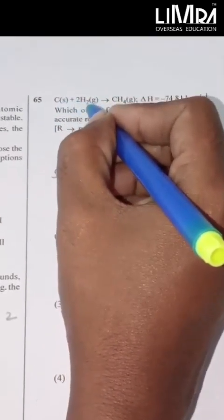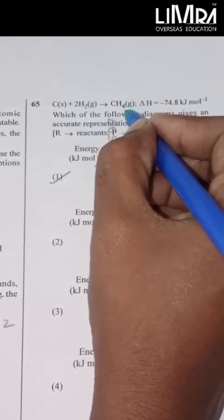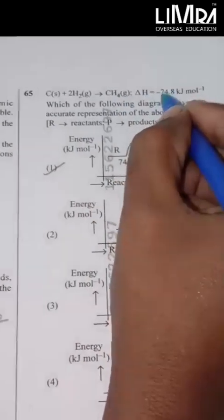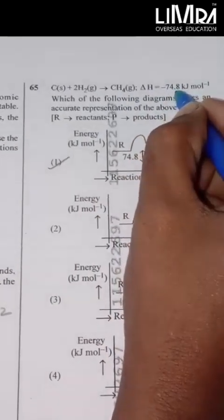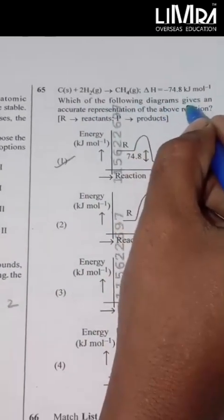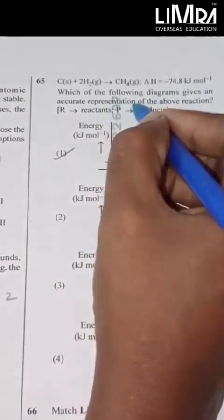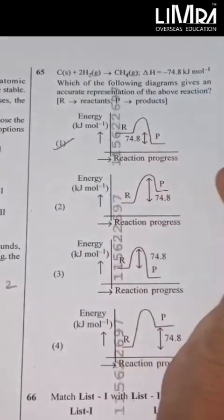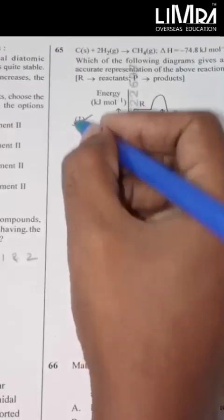C(s) plus 2H2(g) gives CH4(g), delta H is equal to minus 74.8 kJ mole minus 1. Which of the following diagrams gives an accurate representation of the above reaction? The right option is number 1.